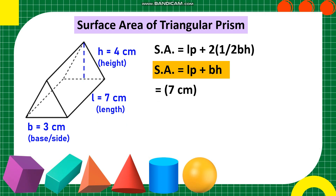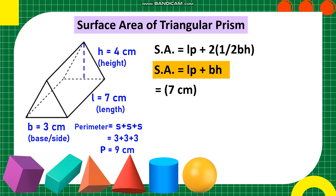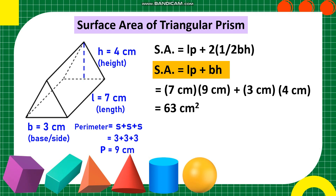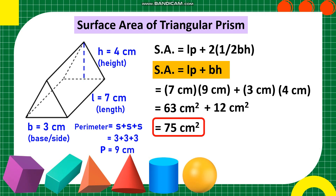Length is 7 centimeters. To get the perimeter of the triangle, we use: Perimeter equals side plus side plus side, which equals 3 plus 3 plus 3. The perimeter of the triangle is 9 centimeters. Then, 7 cm times 9 cm equals 63 square centimeters. Plus base times height: 3 cm times 4 cm equals 12 square centimeters. Adding 63 plus 12 square centimeters gives 75 square centimeters. This is the surface area of the triangular prism.